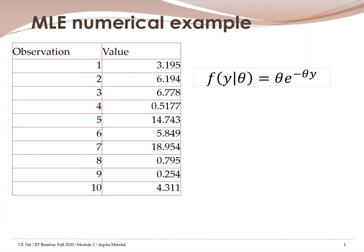Let us now solve a numerical example for maximum likelihood estimation. Let's say we have a sample of size 10 — so here we have 10 observations, the sample size is n=10, and these are my y_i's, the observed random variables. These can be, for example, such as scores in 10 matches. If we take the total sum of this column, it gives us the summation of all the y_i's.